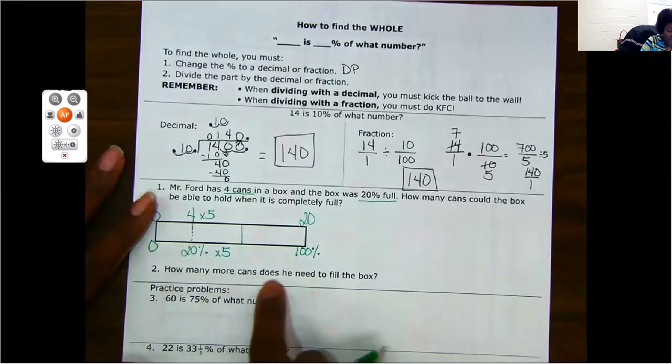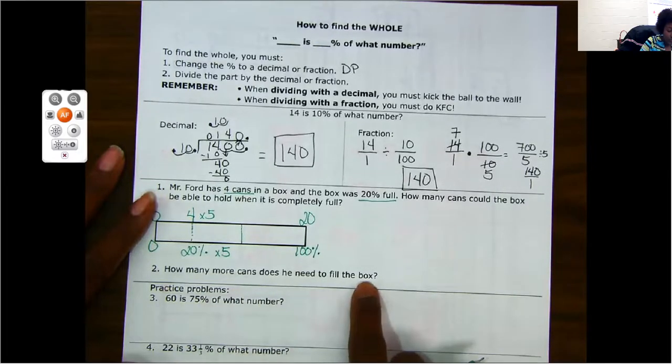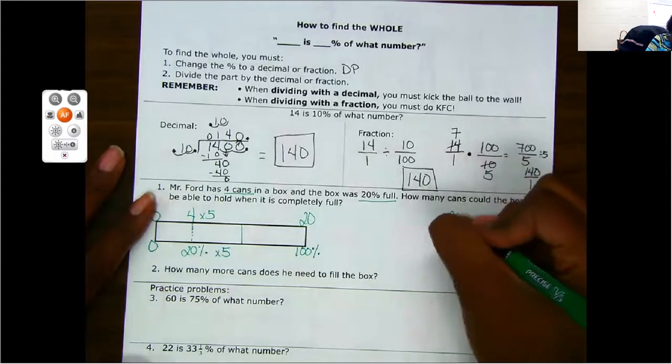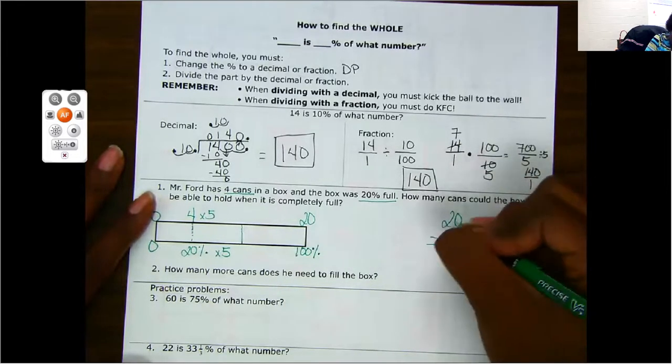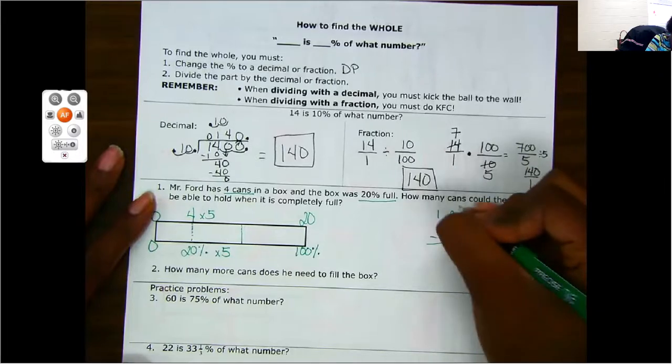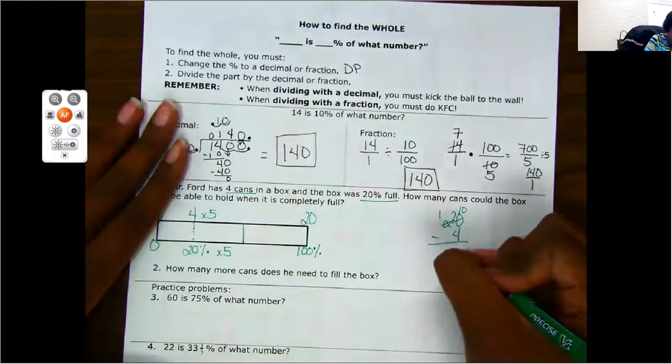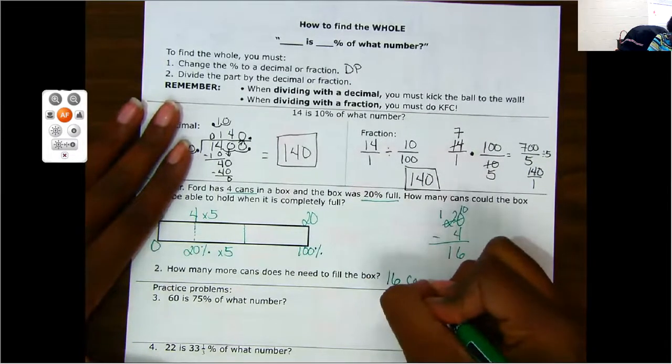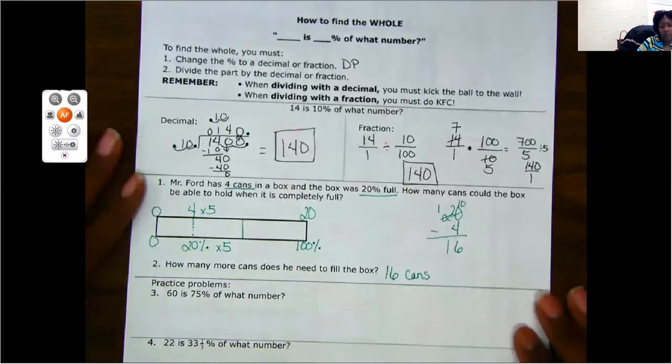How many more cans does he need to fill it? So if he already has four and he needs 20, I can subtract those. Four, five, six, seven, eight, nine, 10. So he would need 16 more cans to make that box full.